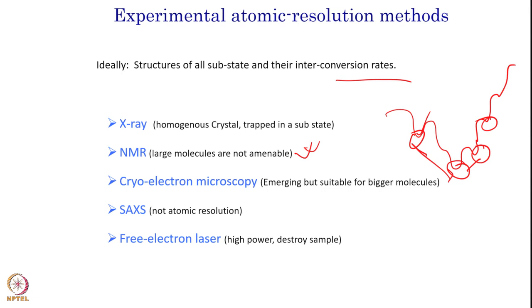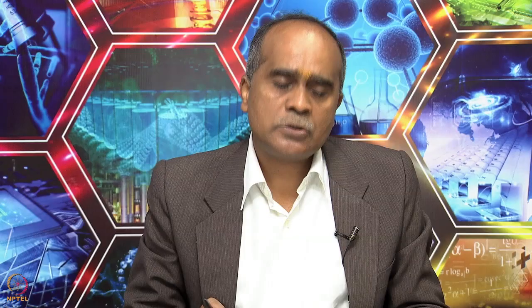There is another technique called SAXS — small-angle X-ray scattering. It is not atomic resolution, but it is very well suited to understand proteins that cannot be crystallized or studied by cryo-EM. You can club SAXS and NMR, where SAXS gives a broader picture and NMR gives a local picture. Another technique that is slowly becoming popular is the X-ray free electron laser (XFEL). The only problem is that it requires high power and can destroy the sample during the experiment. These are some of the high-resolution techniques that can be used to get structure as well as dynamics, and nowadays one needs to combine multiple techniques to get a correct picture of a biomolecule.